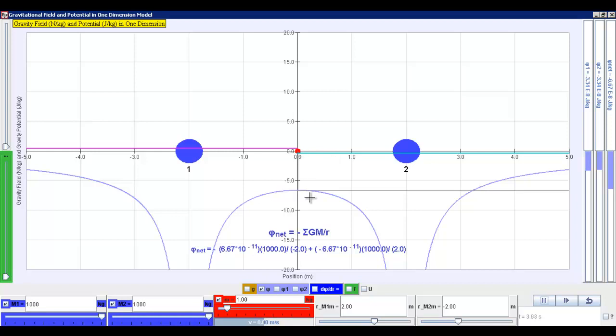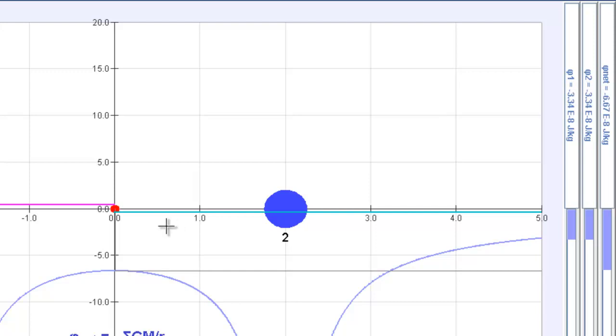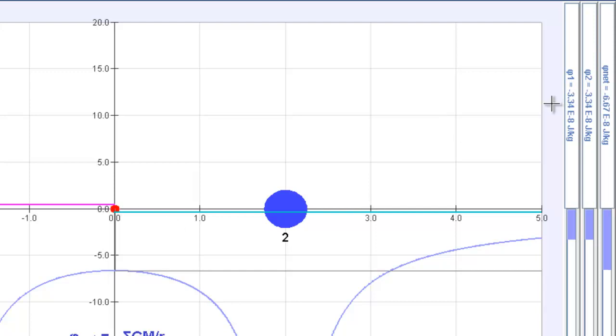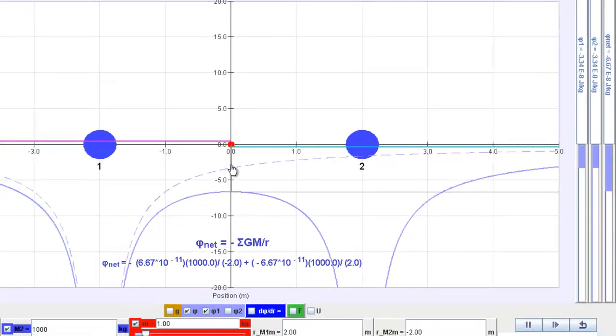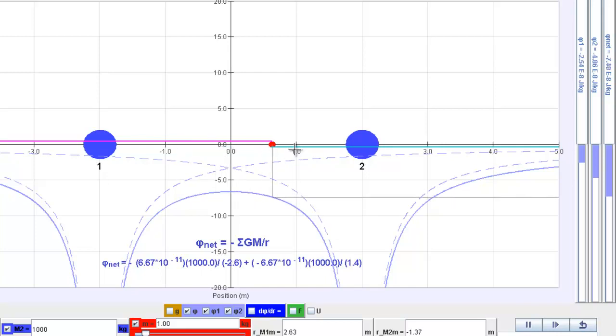But notice that actually the phi1 and phi2 are actually negative, as shown by this value here. So if you target phi1, this will be phi1 at this position here, will be negative 3.34 e to the power of minus 8. And this will also be phi2 at this position. So adding this phi1 and phi2 together you will get a phi net which is actually negative 6.67 to the power of minus 8. So graphically it looks like that but numerically you can also change the position of the test mass to discover for yourself the individual values at that position. And if the simulation is running you can find that it will move according to the Newton's law of motion.